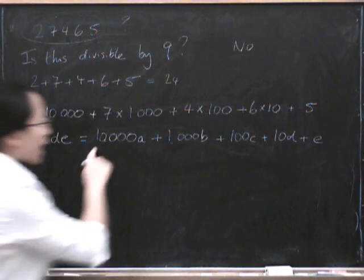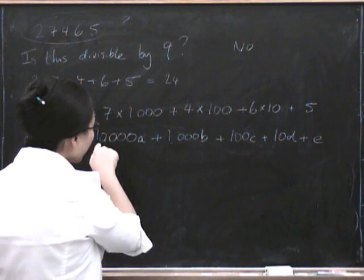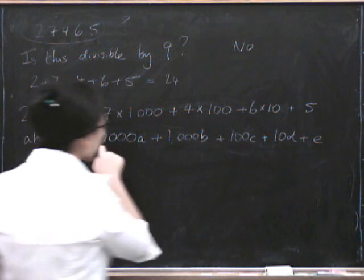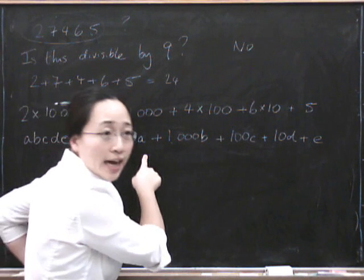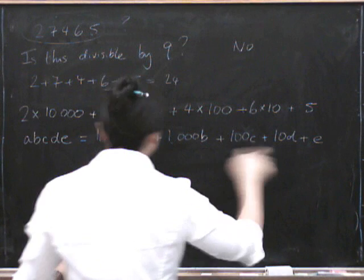So how do we know if this number is divisible by 9? Well, look, we know that 9,999A is divisible by 9. And we know that 999B is divisible by 9, and so on.